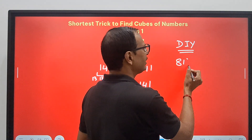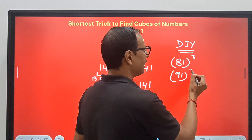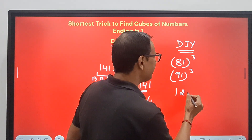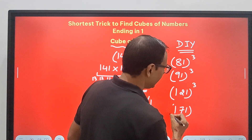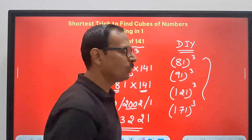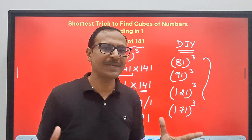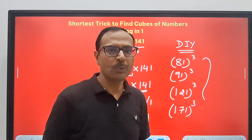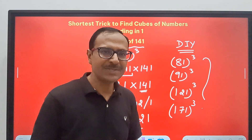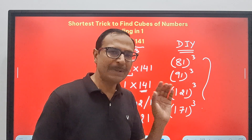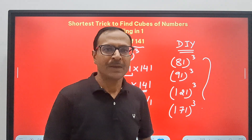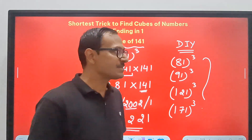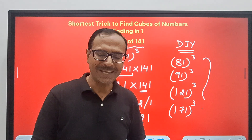Friends, do some DIYs: try 81³, 91³, and extrapolate to three-digit numbers — try 121³ and 171³, and let me know in the comment section whether you could find the cubes using this method. If you are liking these videos, do share with all your friends. Subscribe to the channel and click the bell-shaped icon alongside the subscribe button so you get notifications of future uploads. Practice this trick and let me know in the comments — did it benefit you? Thanks for watching and all the best!